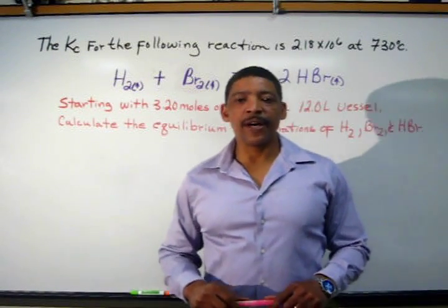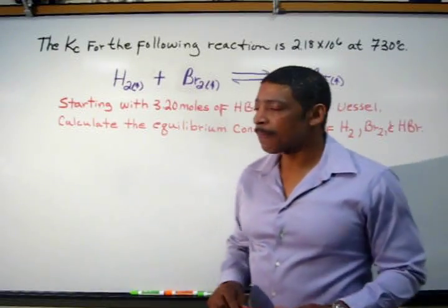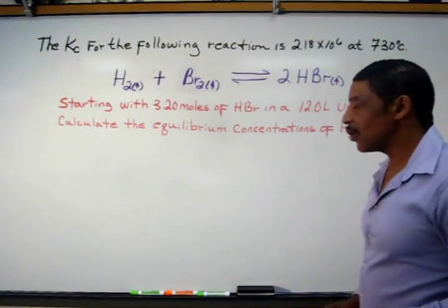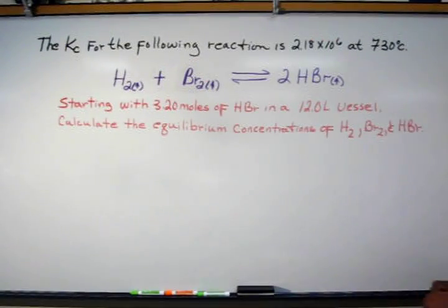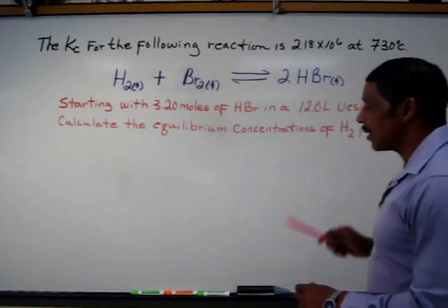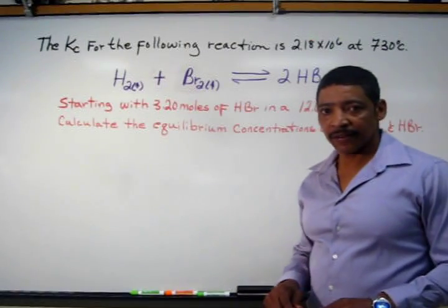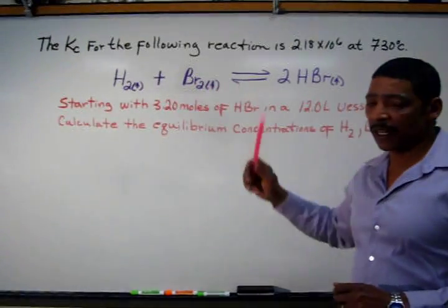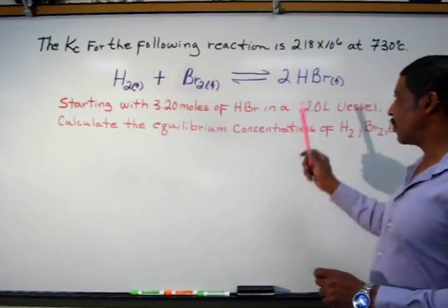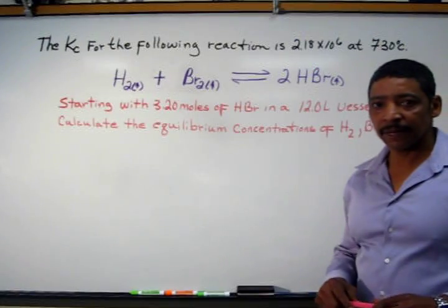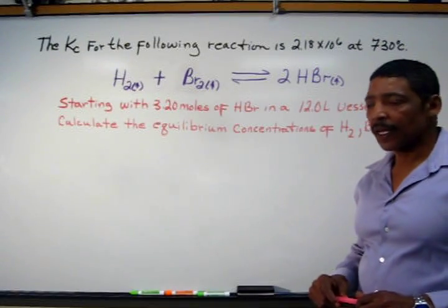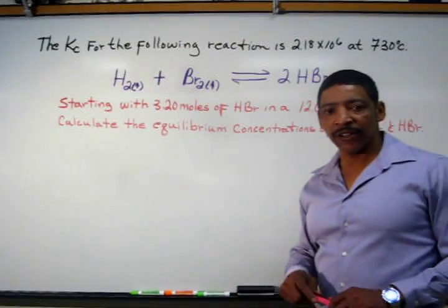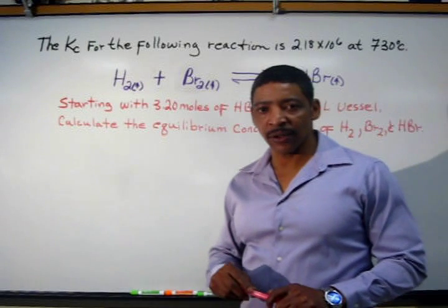Consider the following practice problem. The Kc for the following reaction is 2.18 times 10 to the 6 at 730 degrees Celsius. The reaction is hydrogen gas reacting with bromine vapor, producing hydrogen bromide. Both reactants and products are gases, therefore this reaction is occurring in a closed system.